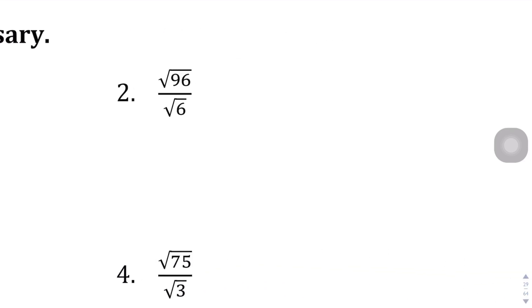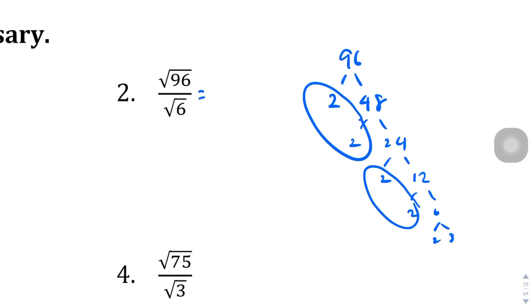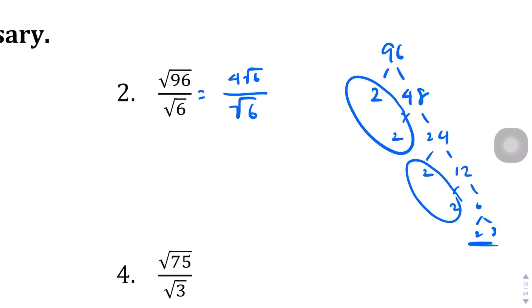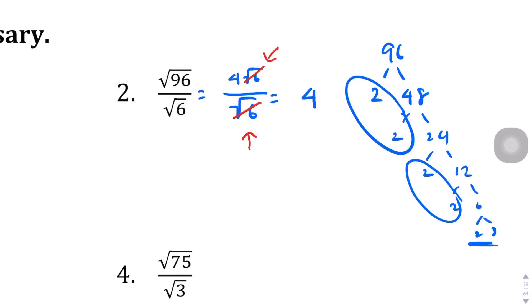Question number 2: treat the numerator and denominator separately. 96 breaks down: 2 and 48, 2 and 24, 2 and 12, 2 and 6, 2 and 3. Two pairs of 2s come out of the numerator — 2 times 2 equals 4 — and a square root of 6 is left over. In the denominator, we have a square root of 6. The square root of 6 in the numerator and the square root of 6 in the denominator cancel each other out, and all we're left with is plus or minus 4.